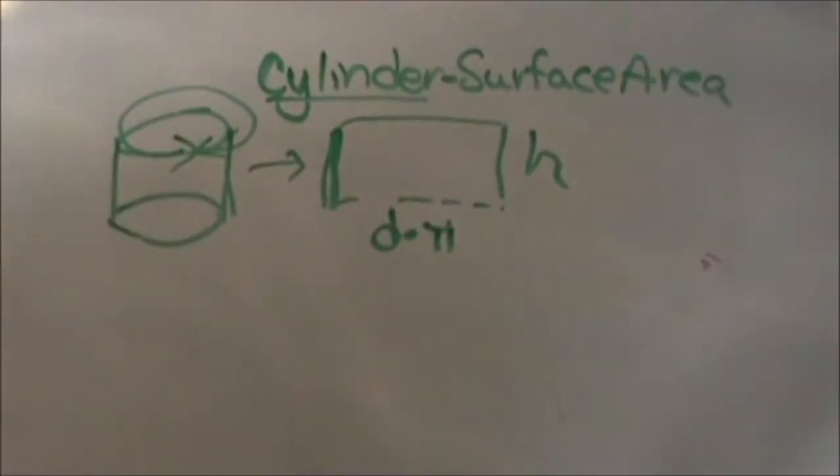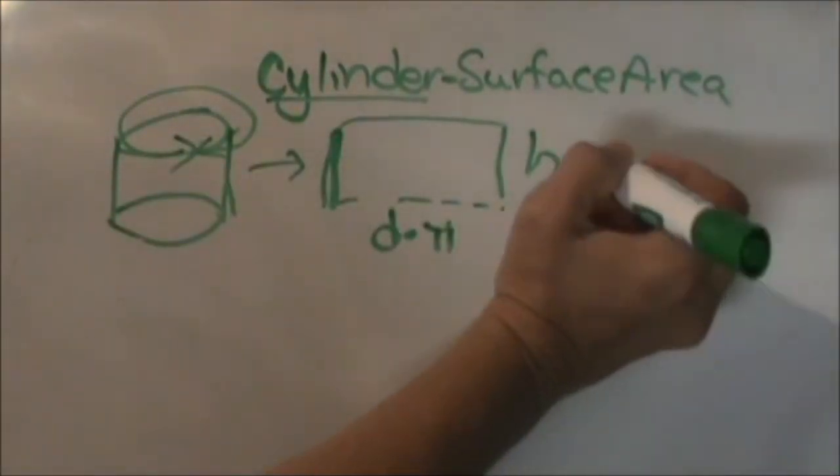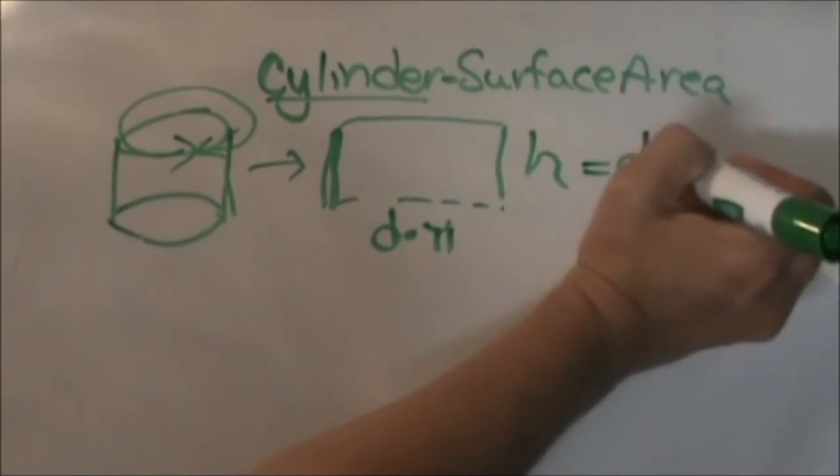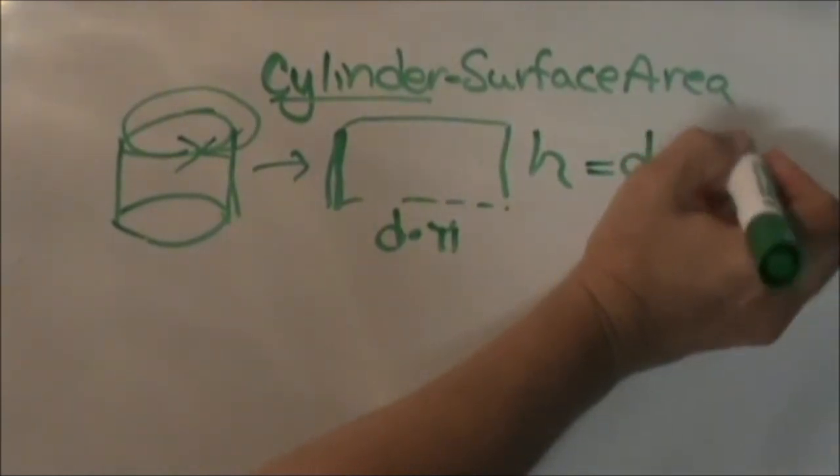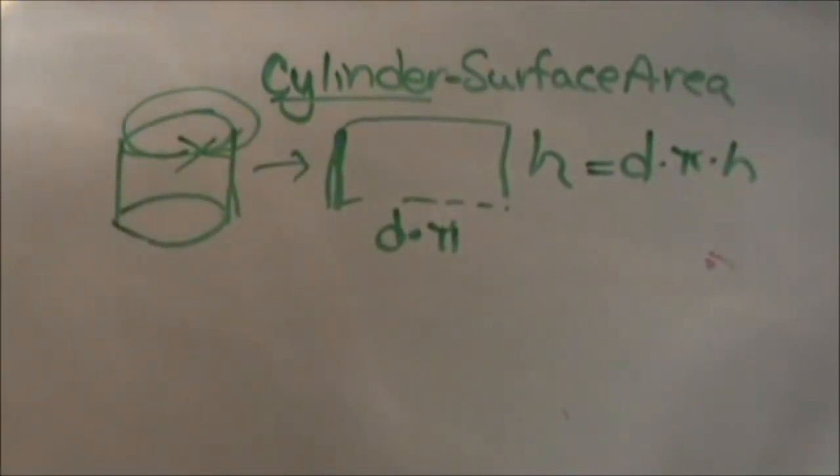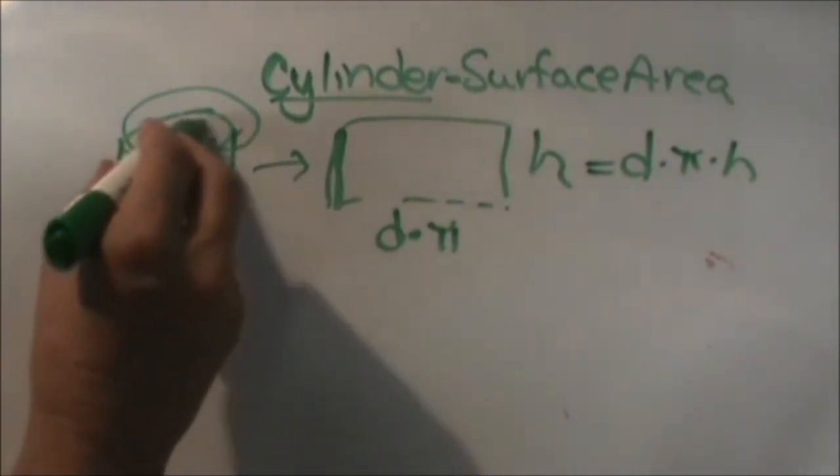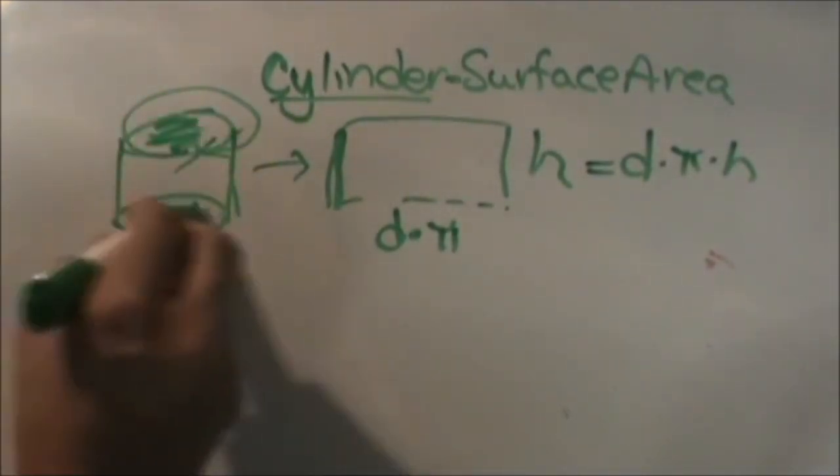So the sides of the can, that's actually called the lateral area, or the soup can label as I call it, and I'm going to call that d times pi times h.